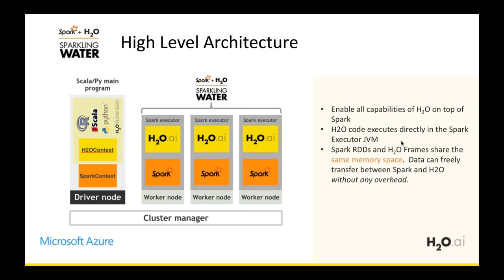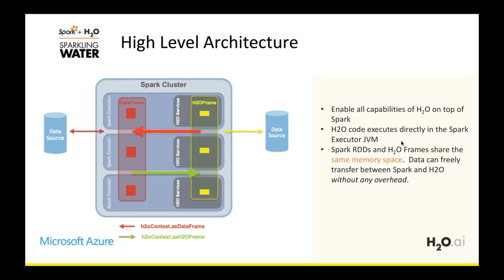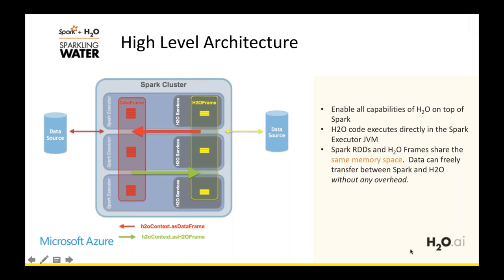All benefits of Sparkling Water accrue to the customer. H2O's R, Python, and Flow interfaces are now all available to Spark users. In practice, you can import data into Spark, create a Spark DataFrame, and then use H2O context to transfer it to an H2O DataFrame in a single command — `as_data_frame(h2o_context)`. The reverse is equally simple: import into H2O first, then convert to a Spark DataFrame using a similar command.